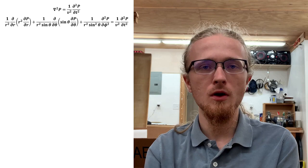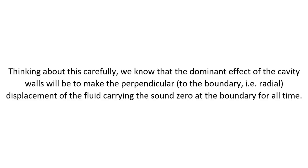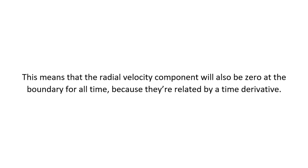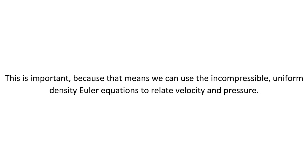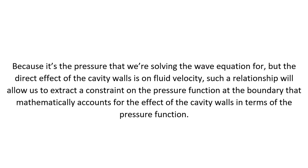Now on to the second and more difficult of those two problems. How exactly do the cavity walls change the problem mathematically? Thinking about this carefully, we know that the dominant effect of the cavity walls will be to make the perpendicular displacement of the fluid carrying the sound zero at the boundary for all time. This means that the radial velocity component will also be zero at the boundary for all time. We also expect that the fluid carrying the sound will be of uniform density and virtually incompressible relative to the sound pressure involved. This means we can use the incompressible uniform density Euler equations to relate velocity and pressure. Because it's the pressure that we're solving the wave equation for, but the direct effect of the cavity walls is on fluid velocity, such a relationship will allow us to extract a constraint on the pressure function at the boundary.